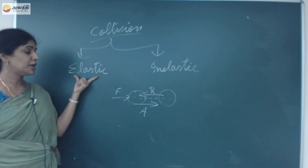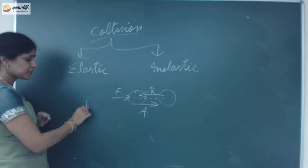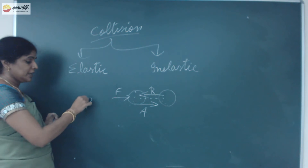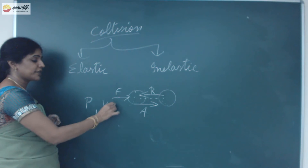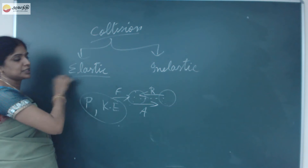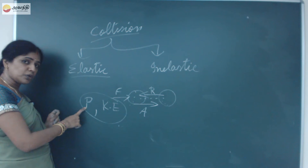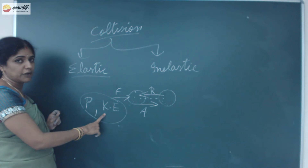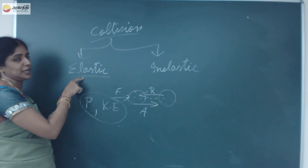In elastic collision, there are two fundamental principles: the law of conservation of linear momentum and the law of conservation of kinetic energy. These two are conserved in an elastic collision — that is, the linear momentum before and after collision, and the kinetic energy before and after collision, will remain the same if the type of collision is elastic.